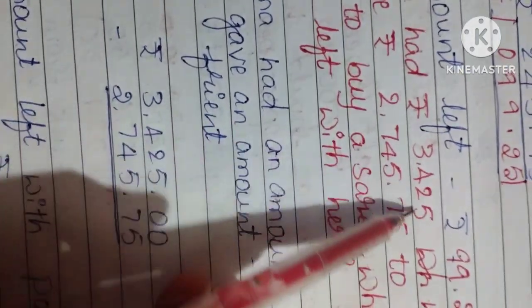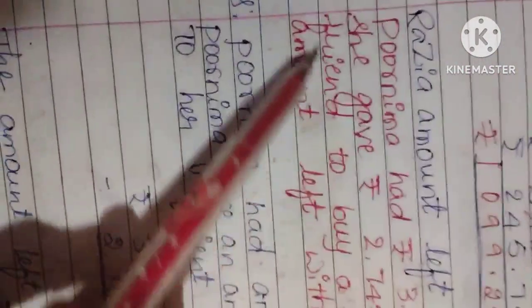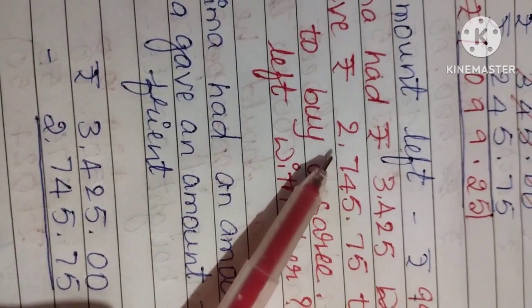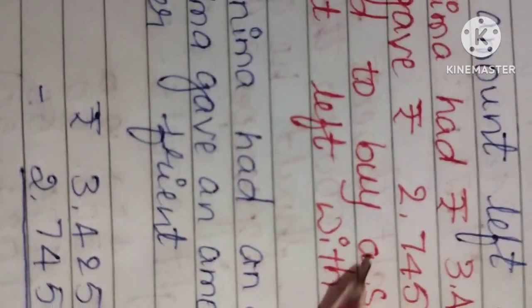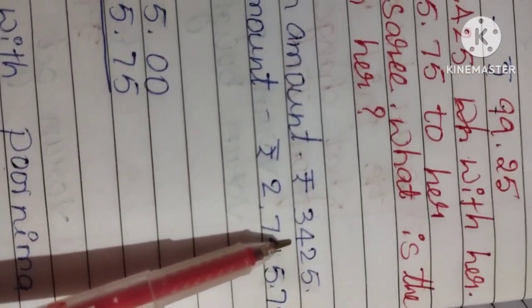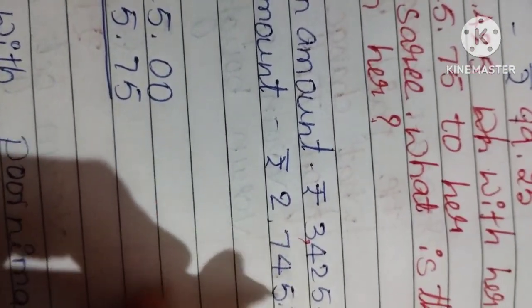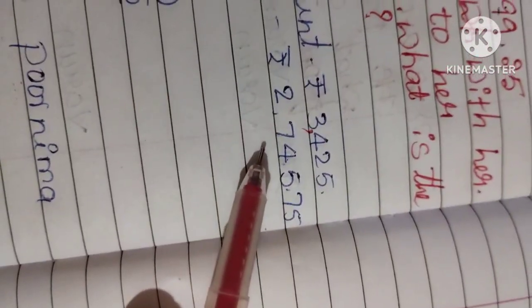Next we have 4th question. Poornima had Rupees 3,425 with her. She gave Rupees 2,745.75 to her friend to buy a saree. What is the amount left with her? See now here. Poornima had an amount 3,425 and Poornima gave an amount Rupees 2,745.75.